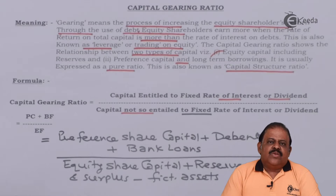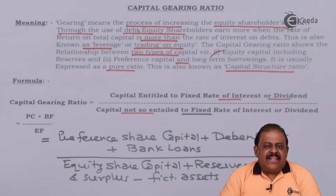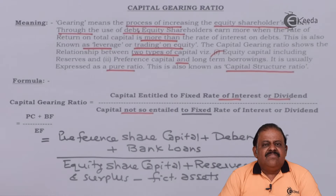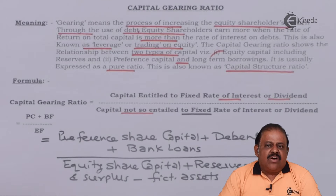If after using the formula we get an answer of 1, the company's capital structure is considered optimum and even. If we get an answer more than 1, the capital structure is considered more favorable. If it is less than 1, the company is focusing more on owner's fund — equity shareholders' fund — and less on borrowed funds, meaning it is not taking advantage of trading on equity.